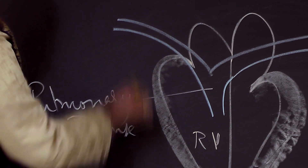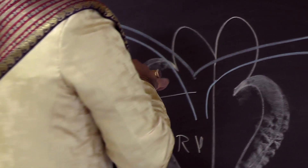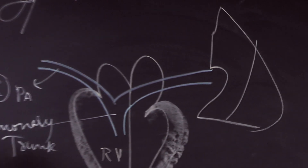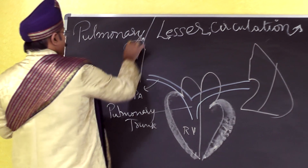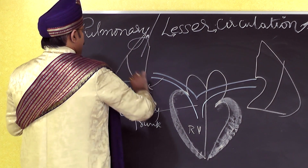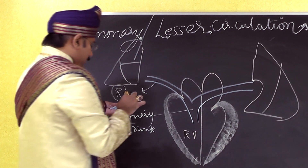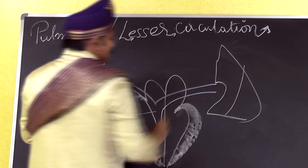The pulmonary trunk divides into the right-sided pulmonary artery and the left-sided pulmonary artery. These arteries go to the lungs. The left lung is shown with the cardiac notch and a single oblique fissure, and the right lung has an oblique fissure and a horizontal fissure.